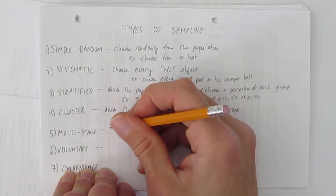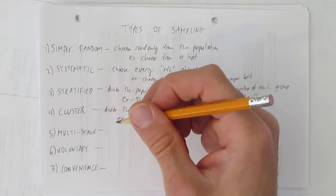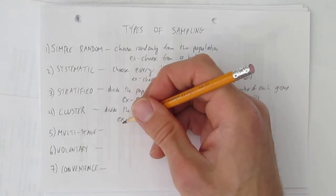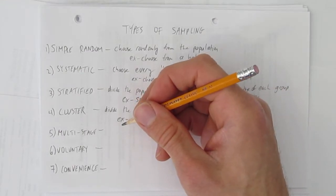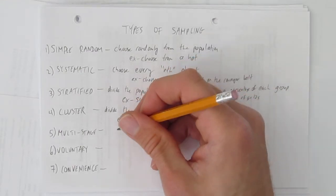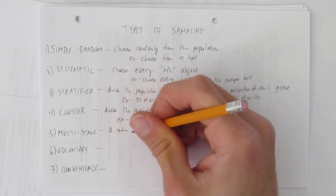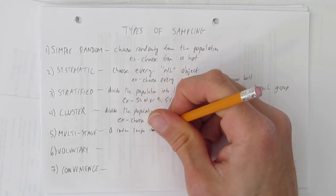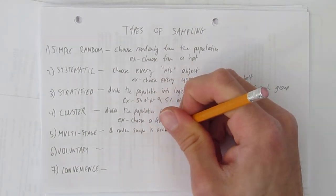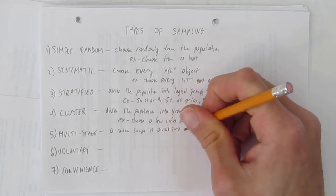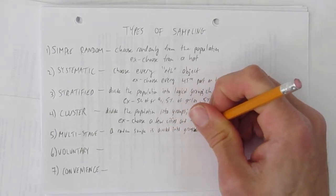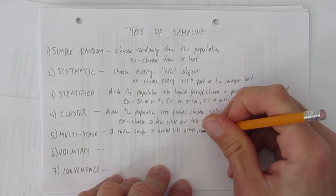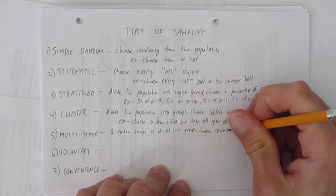Multi-stage is a combination of sort of sampling techniques. You can think about it as sort of a combination of the ones above. Here's why. A random sample is divided into groups. So make random groups this time. Randomly put people into group A, into group B, into group C, and then choose randomly from the groups.